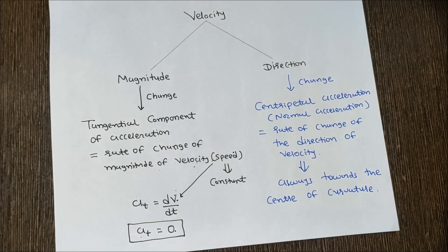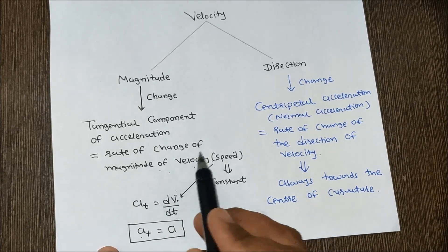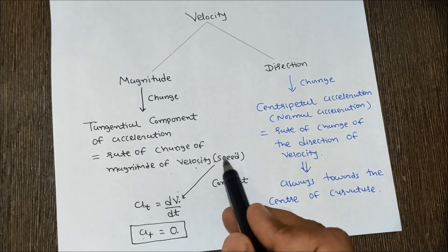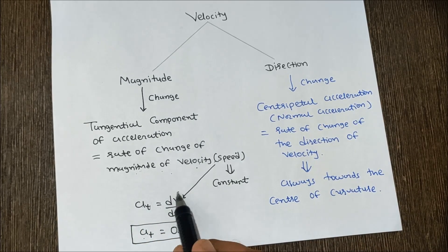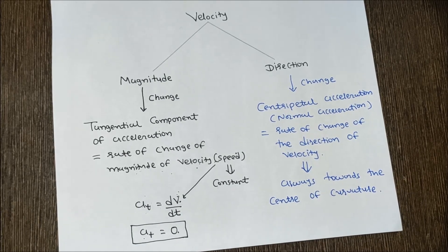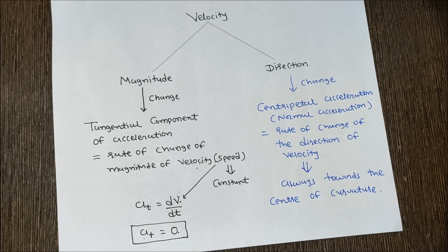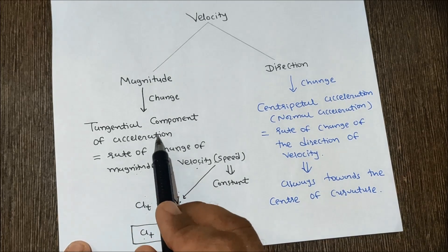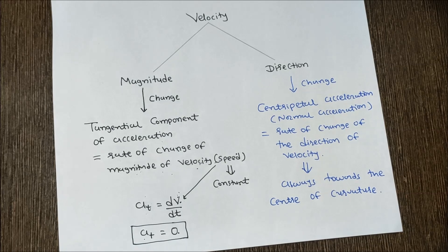To repeat: tangential component of acceleration is the measure of rate of change of magnitude of velocity — that is, speed. If speed is constant, tangential component is zero. In uniform circular motion, tangential component of acceleration is zero. Also, tangential component is not affected by the change in direction of velocity.